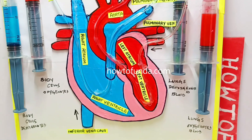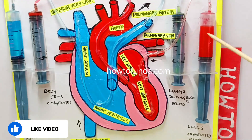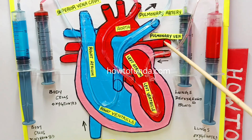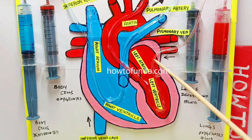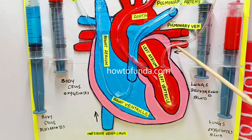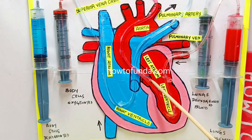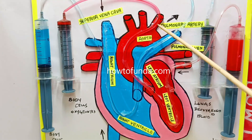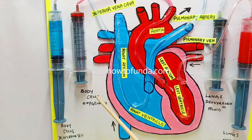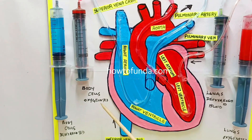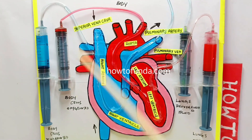The lungs take that deoxygenated blood and convert it into oxygenated blood. Once the oxygenation happens, the lungs send that blood to the pulmonary vein. The oxygenated blood then goes to the left atrium, again to the left ventricle, from left ventricle it goes to the aorta, and from the aorta it goes to all human body cells which require oxygenated blood.